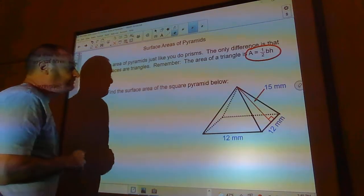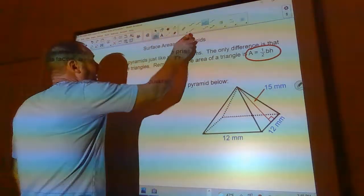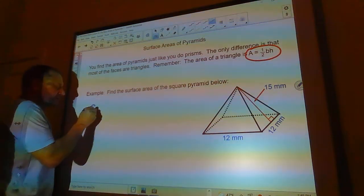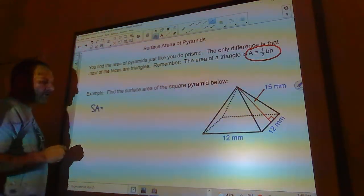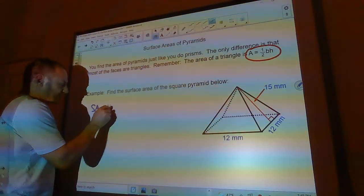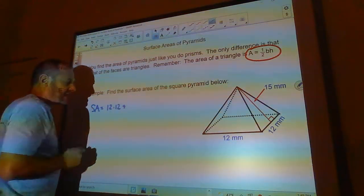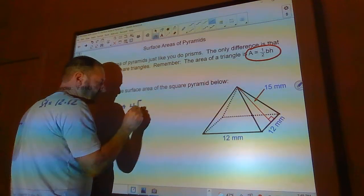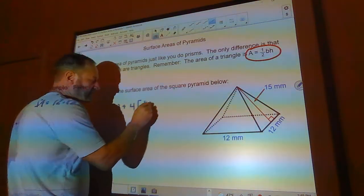So we're going to find the surface area here. We're going to do the base first. That's going to be 12 times 12, that's pretty easy. Then we've got four lateral faces that are all identical triangles, so it's half the base times the height. The base is going to be 12, the height is going to be 15.